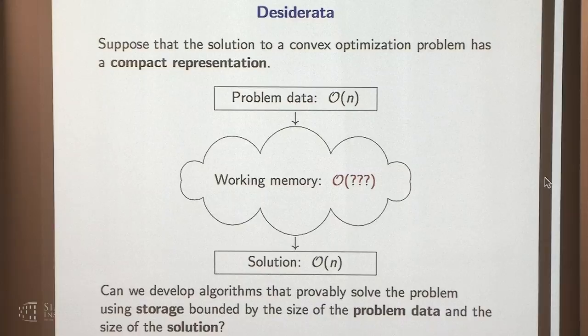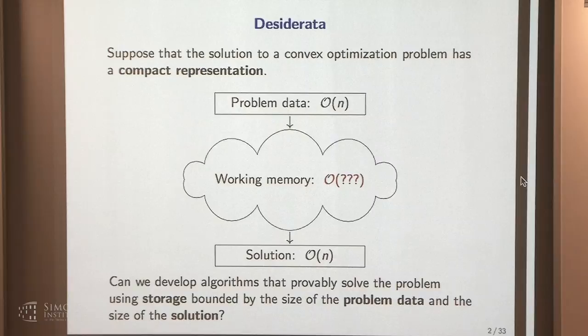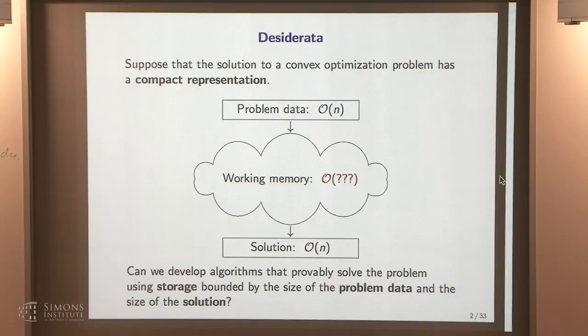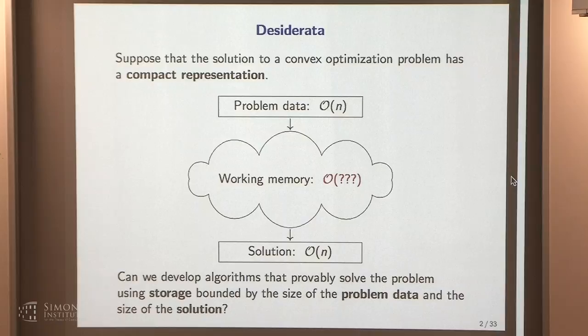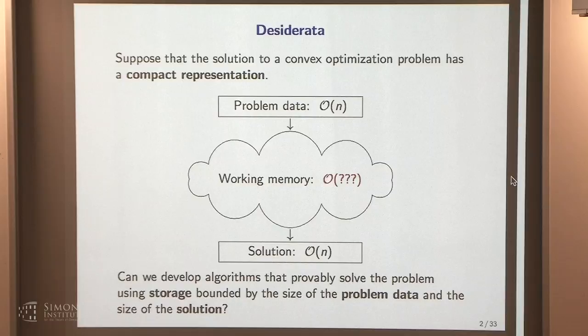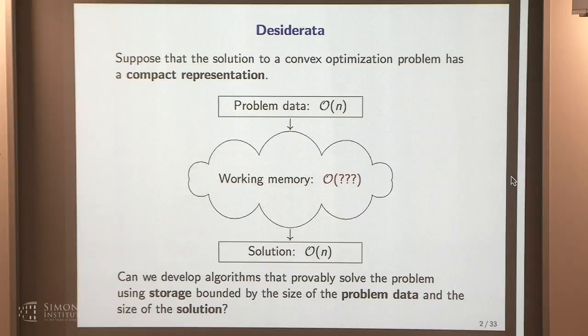Here's the basic problem we were motivated by. Suppose we have a convex optimization problem with a compact representation — meaning I can write down the problem using order n floating point numbers. And suppose I also know the solution can be represented using order n floating point numbers. The question is: how much memory does it take to solve this problem? Clearly I need at least order n memory to read in the data and write out the solution. But can I always achieve order n memory?